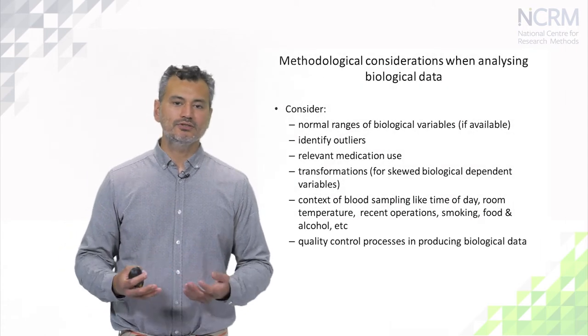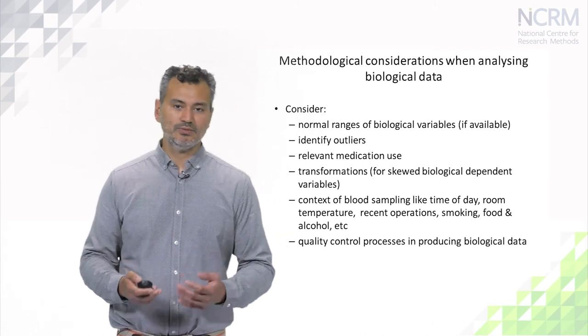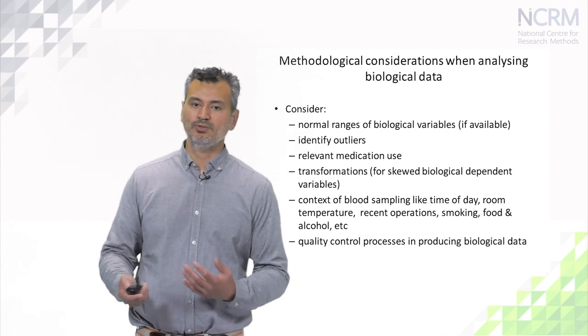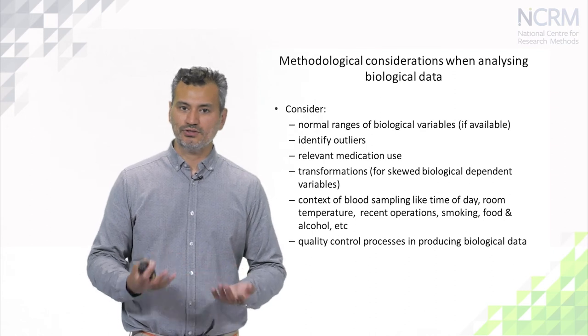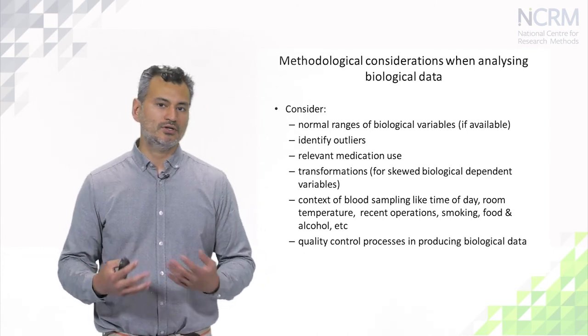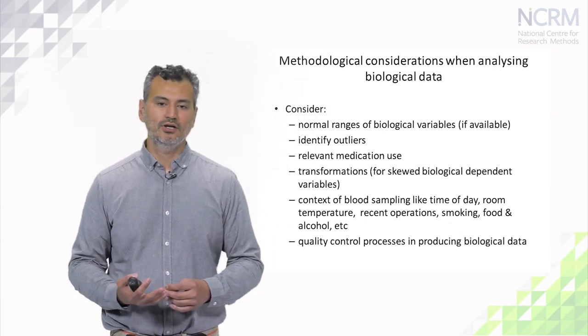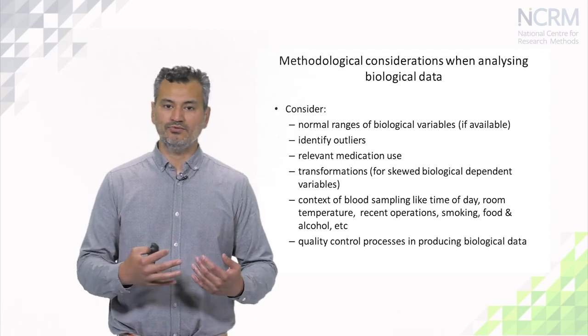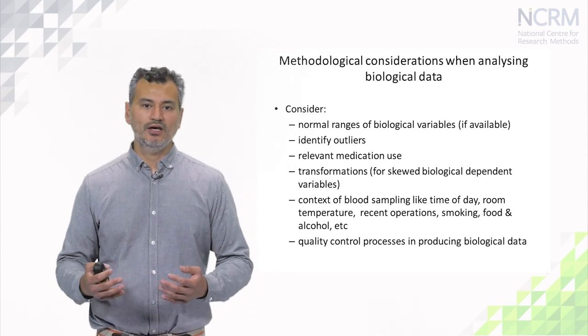To sum up about data quality issues to keep in mind when analyzing biological data sets: we need to consider the normal ranges of biological variables and identify outliers. We need to identify whether the respondent has taken any relevant medication and either control for it or delete people with particular medications from the analysis. We need to consider statistical transformations for highly skewed biological dependent variables in a regression modeling context. We definitely need to keep in mind the context of blood sampling — time of day, room temperature, recent operation, recent smoking, food or alcohol — and also the laboratory-based quality control processes. Is it a good lab that produced these biomarkers?